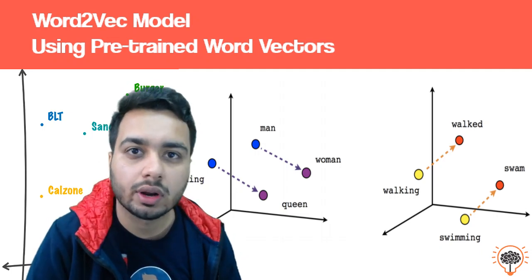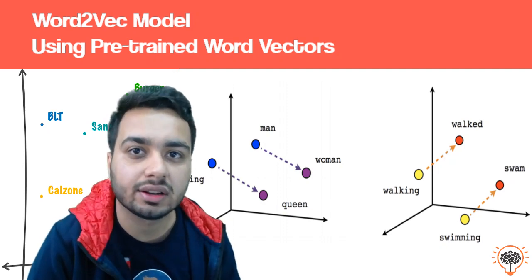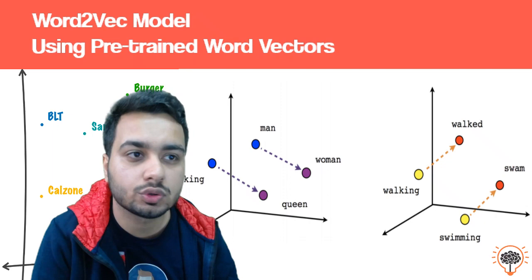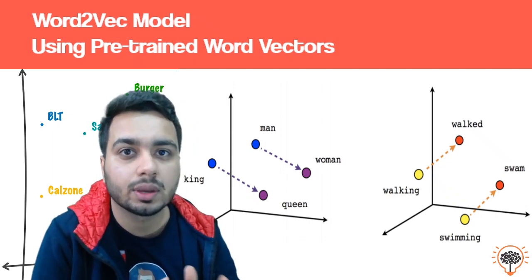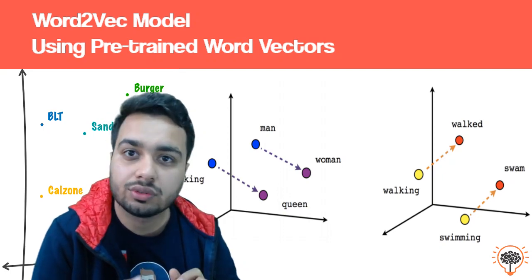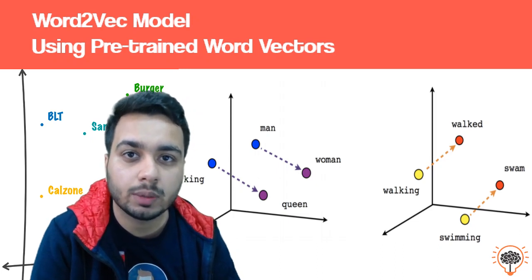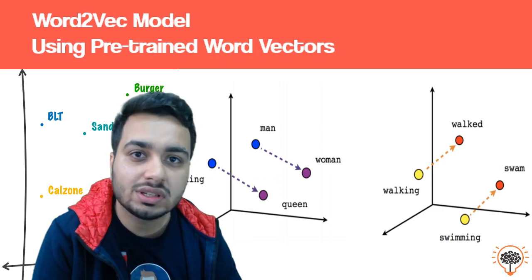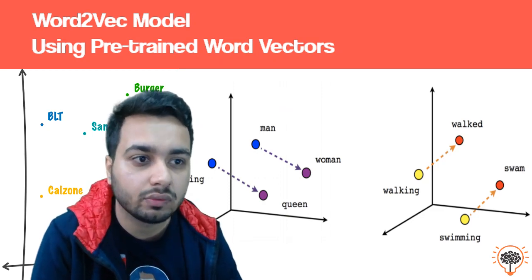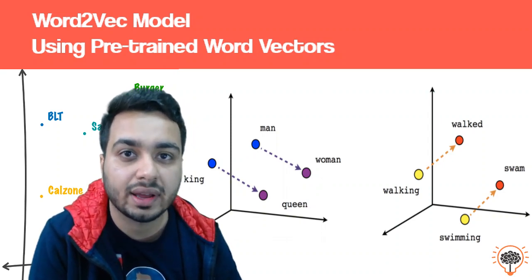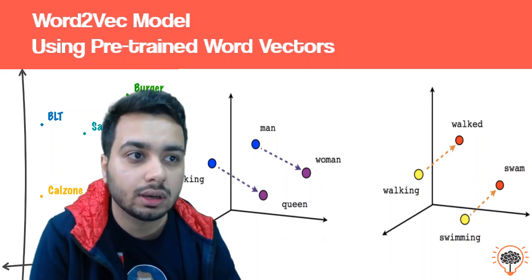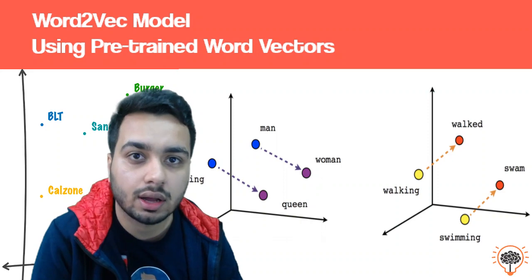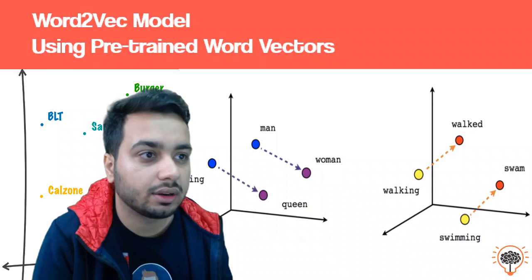Today we are going to talk about the Word2Vec model, which is a powerful deep learning model for converting words into vectors. We earlier saw multiple ways to convert words into vectors - TF-IDF and Count Vectorizer - but Word2Vec is a deep learning approach. It learns word vectors dependent upon the context in which a word is used. For example, the vector for 'apple' as a fruit will lie close to vectors of mango, guava, pineapple, while the vector of 'iPhone' will lie close to Samsung or Nokia.